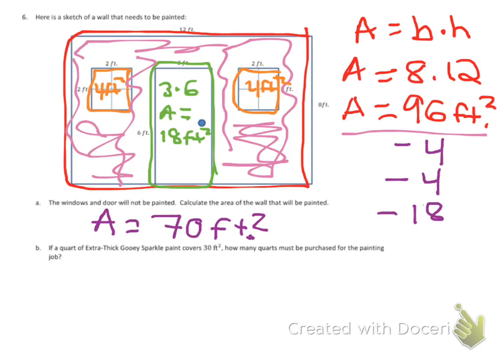Next, they're asking us if a quart of extra thick gooey sparkle paint covers 30 feet squared, how many quarts must be purchased for the painting job? So we know that they need to be able to cover 70 feet squared, and each one covers 30 feet.